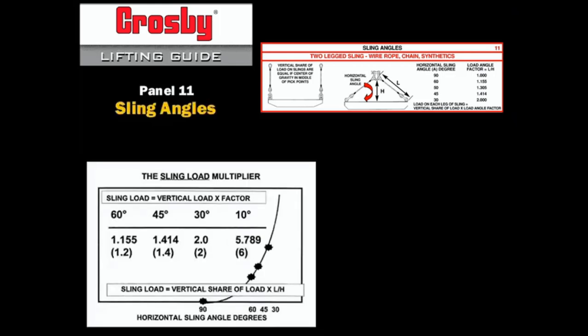Thus, as the sling angle approaches 30 degrees, the multiplier increases significantly. Below 30 degrees, the multiplier increases even more dramatically. Never allow a horizontal sling angle smaller than 30 degrees.